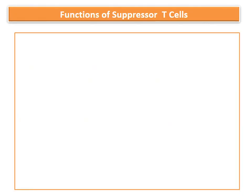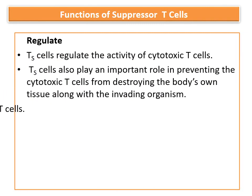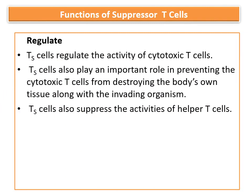The third type of T cell is the suppressor T cell. As the name says, they suppress the function of cytotoxic T cells and helper T cells, thereby regulating the whole cell mediated immune system. This also prevents T cells from destroying the body's own tissue along with the invading organisms.